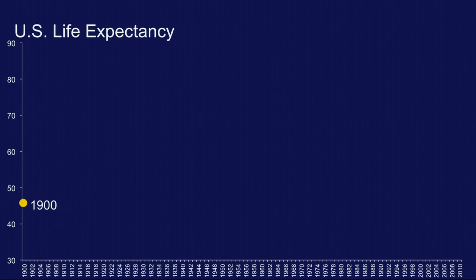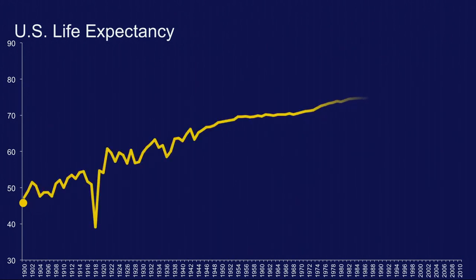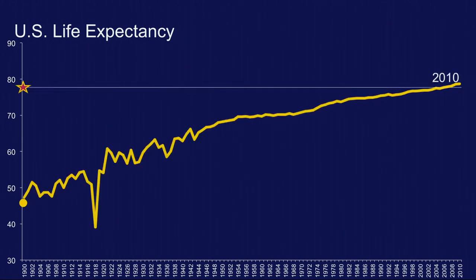Look what happened in the course of that century. If you follow that curve, you'll see that it starts way down there. There's that dip for the 1918 flu. And here we are at 2010 — average life expectancy of a child born today: age 79. And we are not done yet. That's the good news, but there's still a lot of work to do.